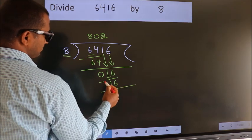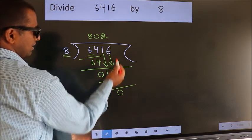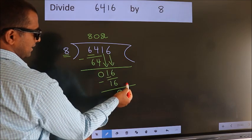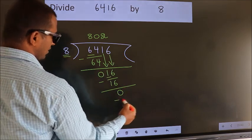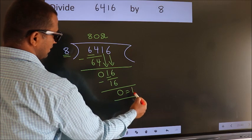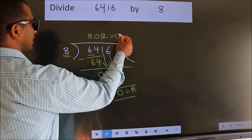Now, we subtract. We get 0. No more numbers to bring it down. So, we stop here. This is our remainder. This is our quotient.